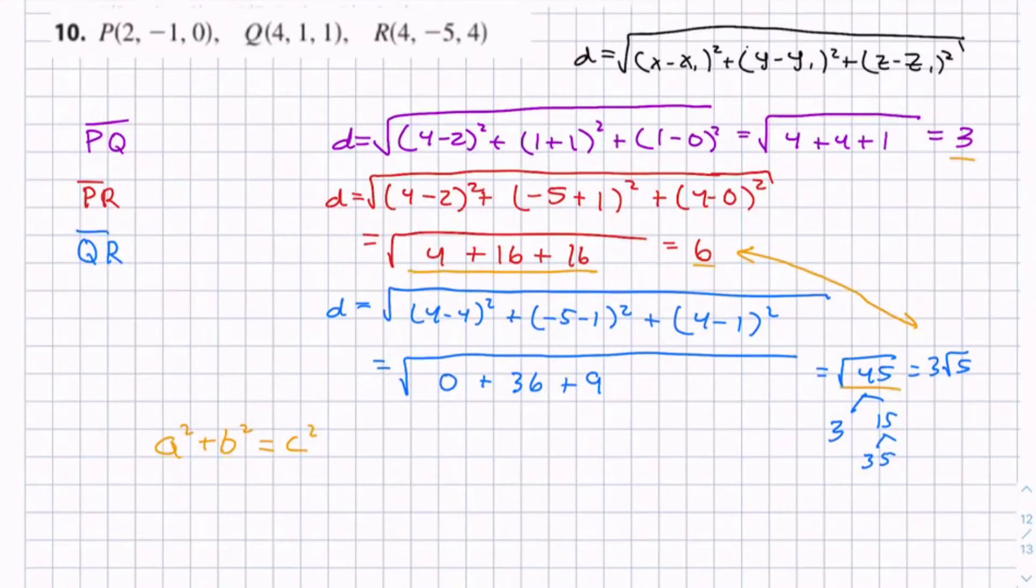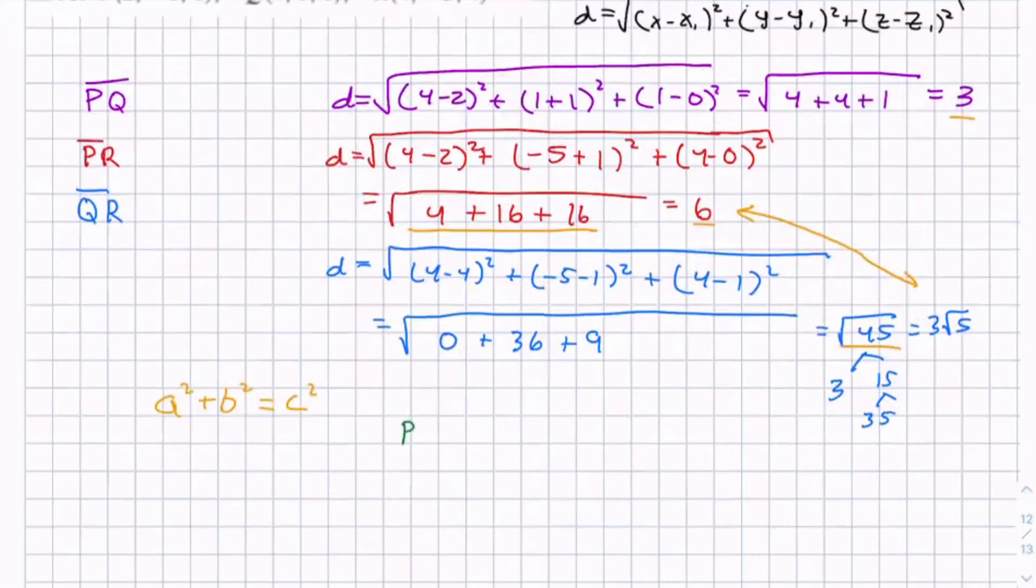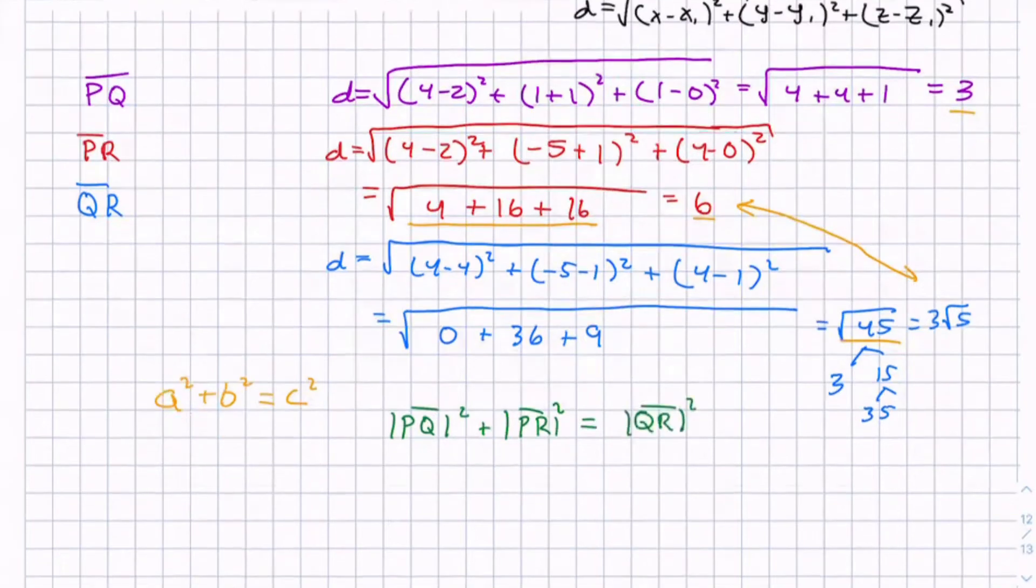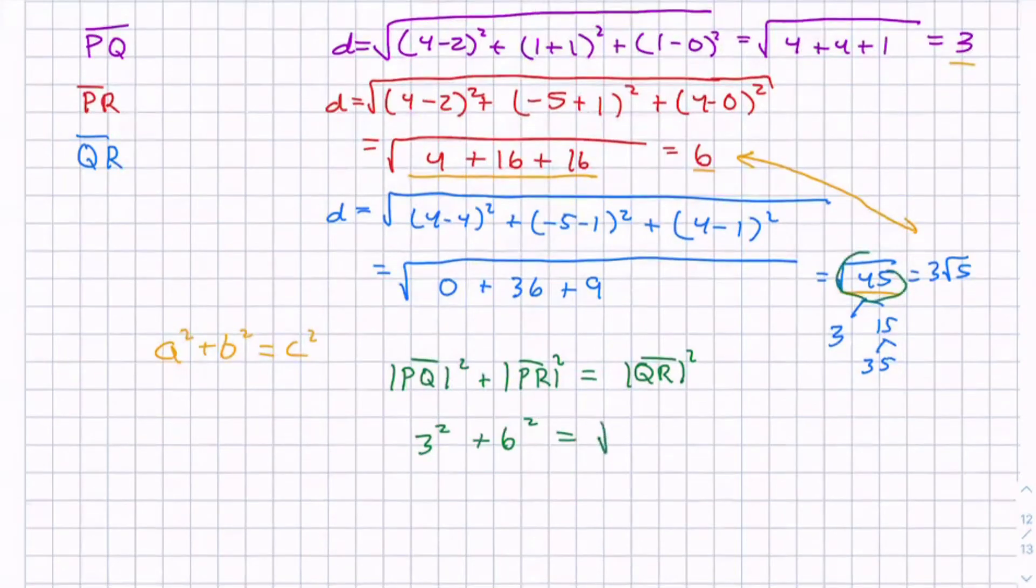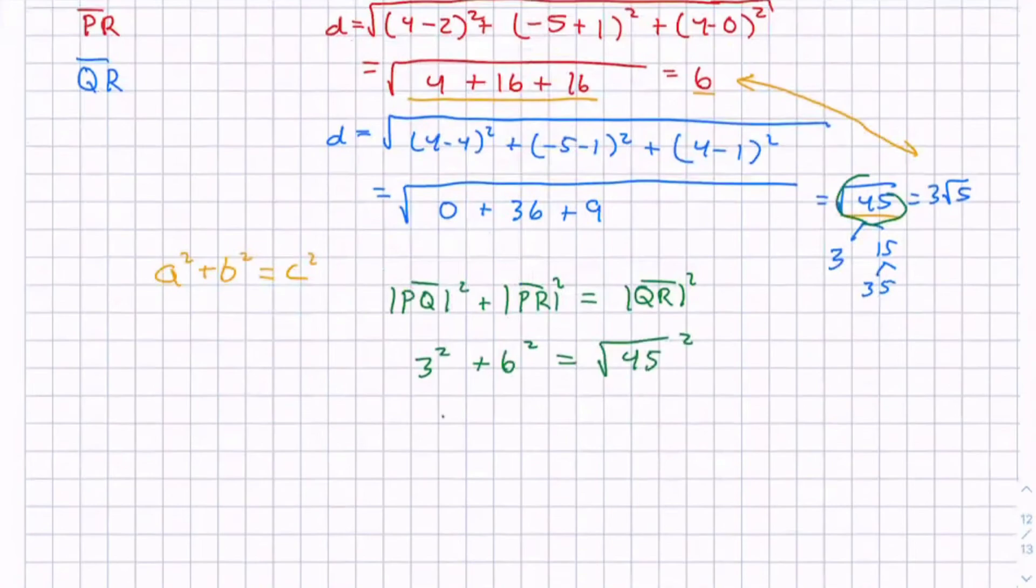So since we know 3 and 6 need to be the legs, and √45 needs to be the hypotenuse, let's see if it equals this equation. So we have PQ² + PR² = QR². And we have 3² + 6² equals—so this is where I want to keep in the √45, because it's going to make this calculation easier—45². If 9 + 36 equals 45, 45 equals 45. So triangle PQR is a right triangle.